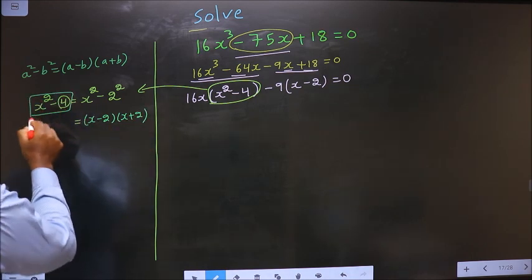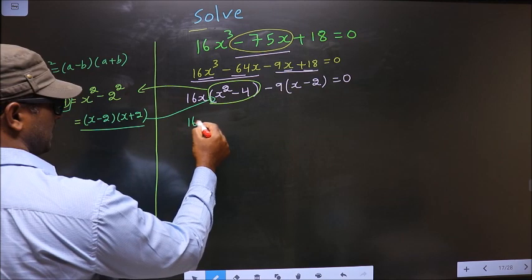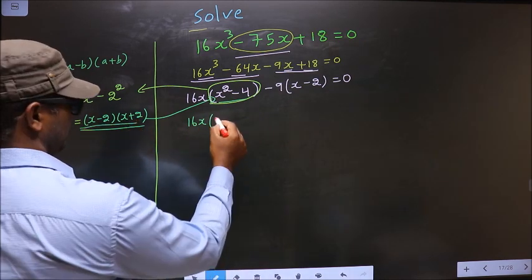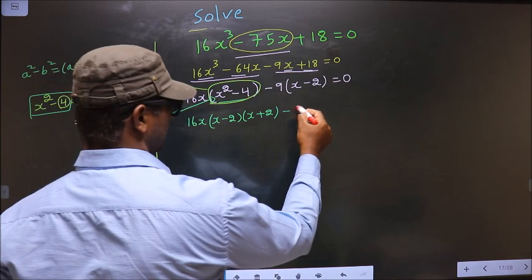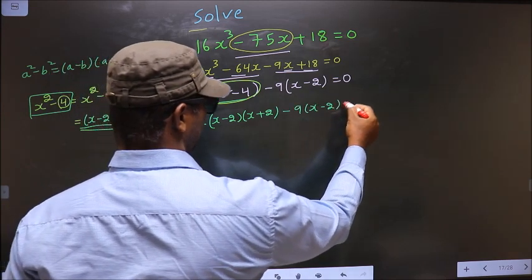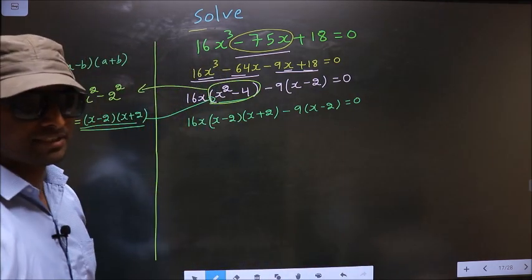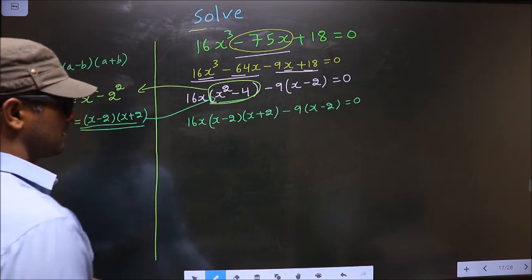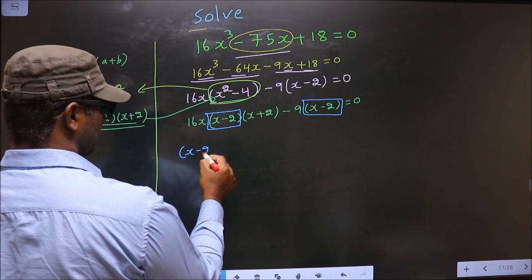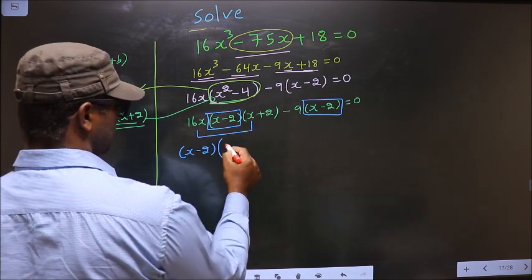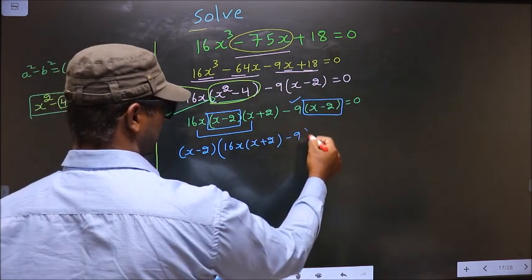Now in place of x squared minus 4, I will replace it with x minus 2 times x plus 2. So we get 16x times x minus 2 times x plus 2, minus 9 times x minus 2, equal to 0. From this entire expression, what can be taken out common is x minus 2.